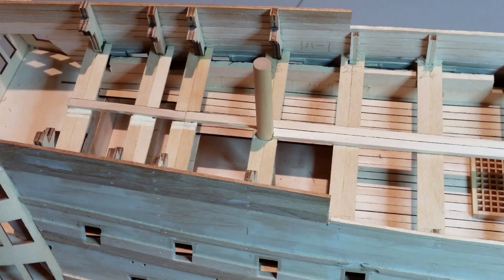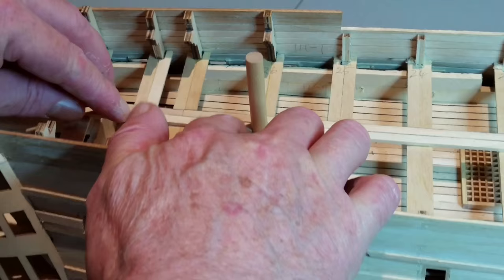Fit the aft sections of the center plank running from frame 23 to frame 30, this time leaving a gap to clear the mizzen mast.